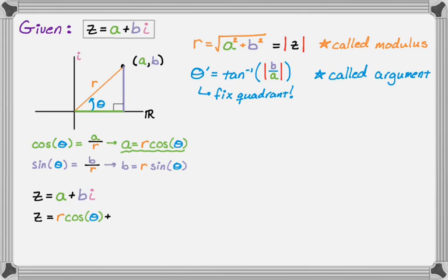And then it'll be plus b is r sine theta. So r sine theta, and then times i. And then if you look at it, they both have an r in them, so it's pretty common to factor the r out. And then you get r times the quantity cosine theta plus i sine theta.